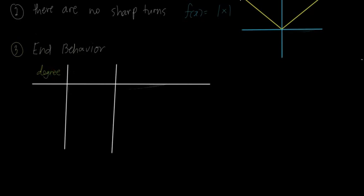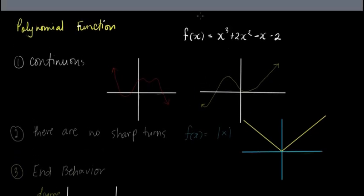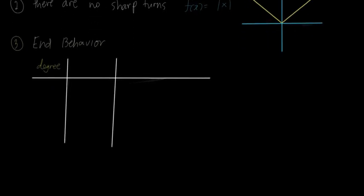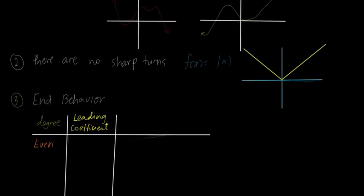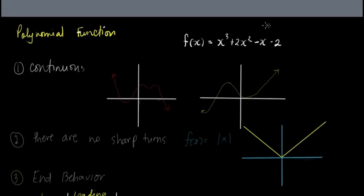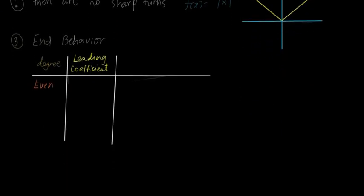Kung polynomial yan, polynomial in x, for instance this one: f of x equals x cubed plus 2x squared minus x minus 2. Ang degree nito, 3 — yung highest exponent. So yung degree, pwedeng even or odd. The second thing we need to consider is yung sign ng leading coefficient. For this case, yung leading coefficient nito ay 1 — it's a positive 1. So pwedeng positive or negative.